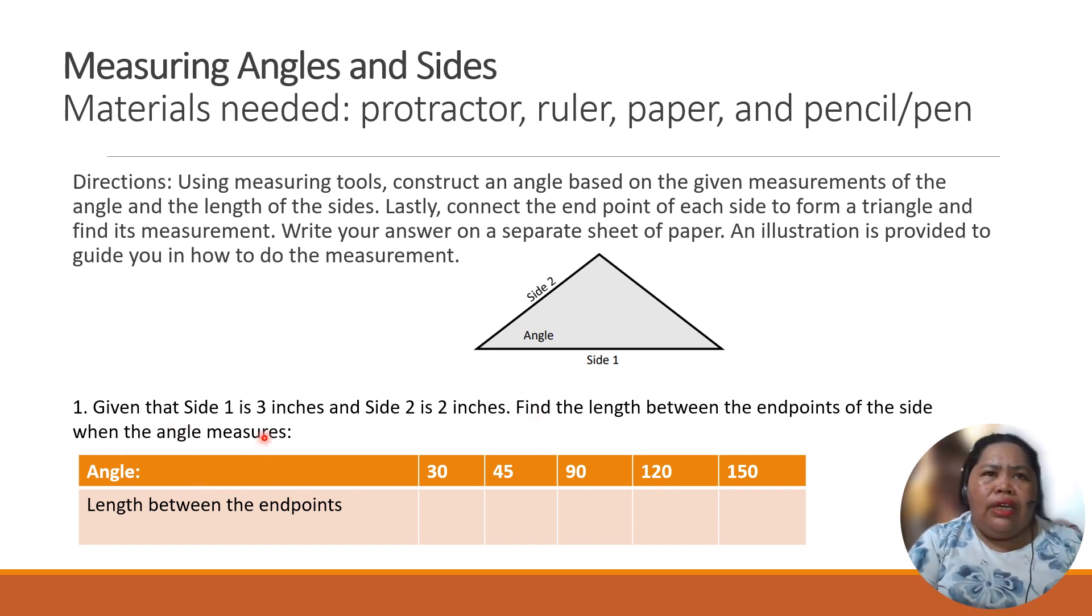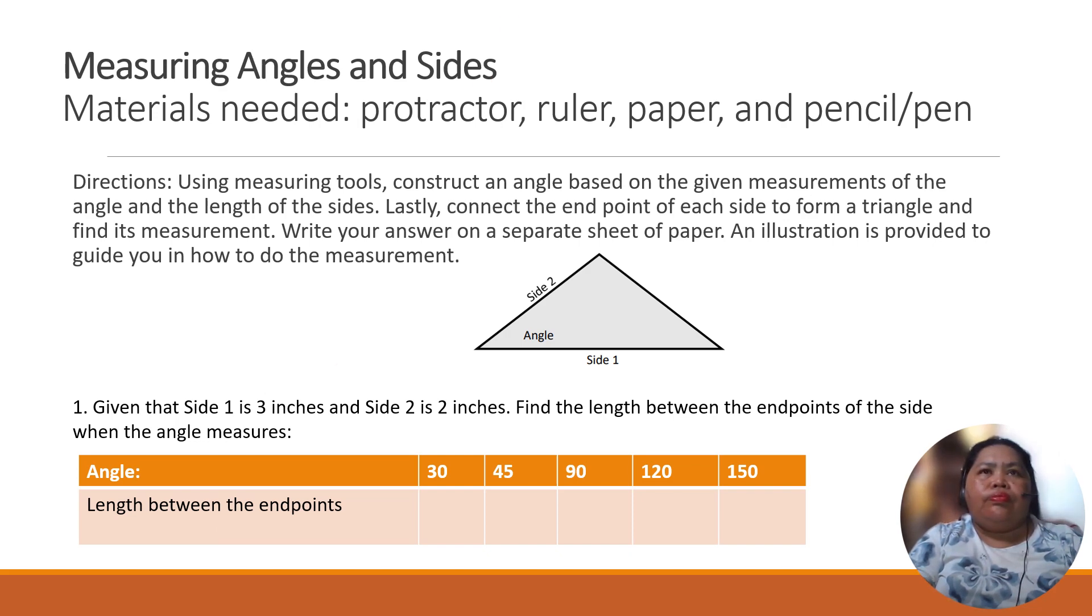So, given that side 1 is 3 inches and side 2 is 2 inches, find the length between the endpoints of the side when the angle measures. For example, length between endpoints in 30 degrees angle. Of course, probably you already know how to measure the angle with a protractor. If not, I'm gonna teach you how to do it. But you have to bring your materials. So we have to do it on the next class.